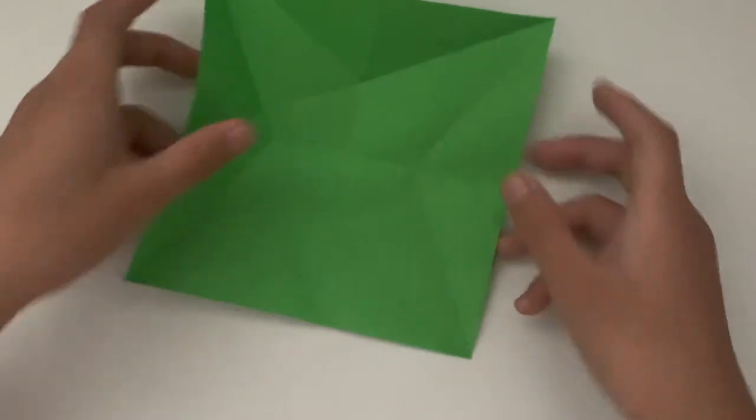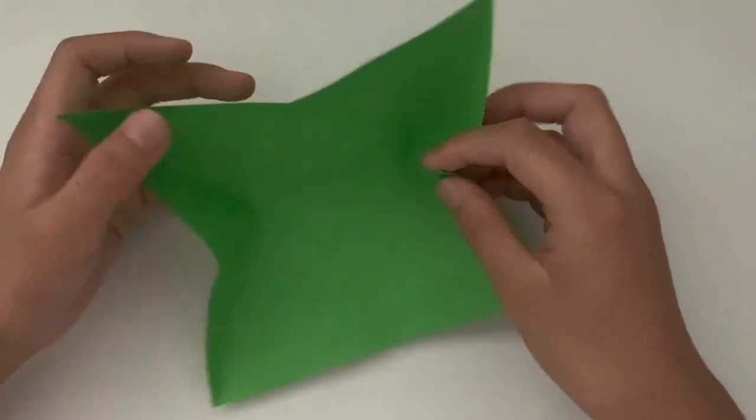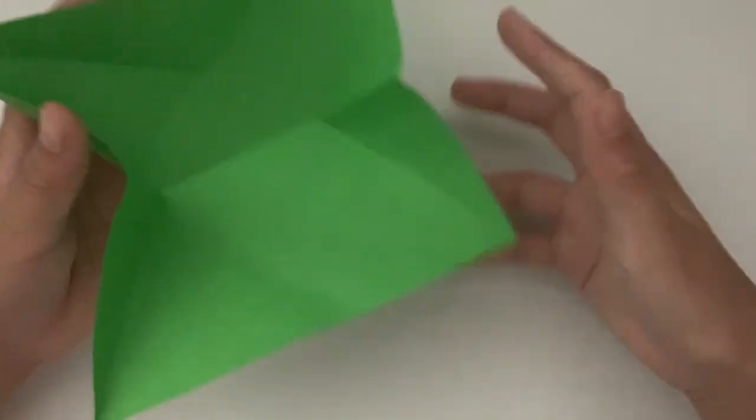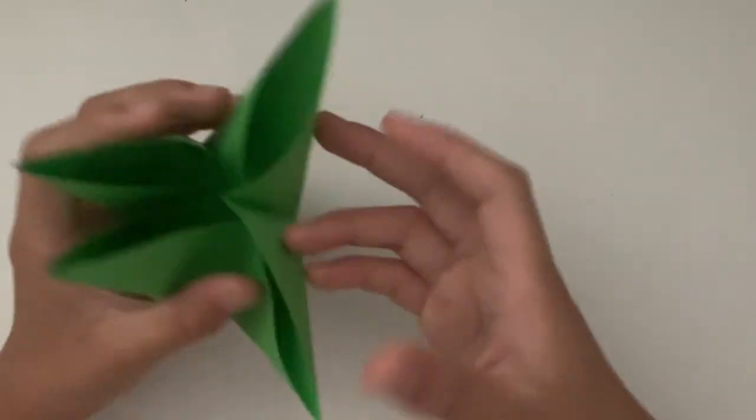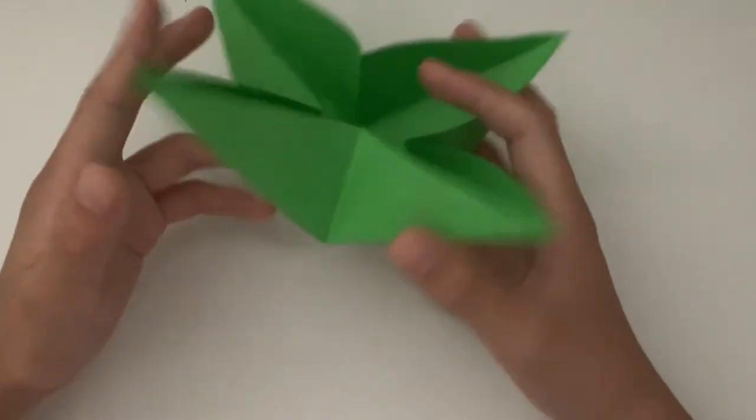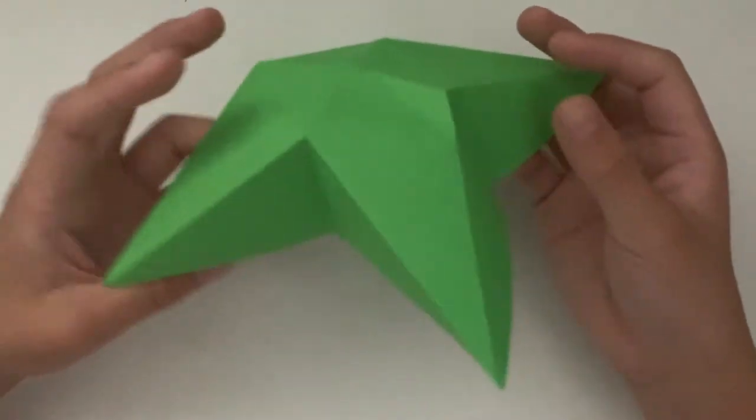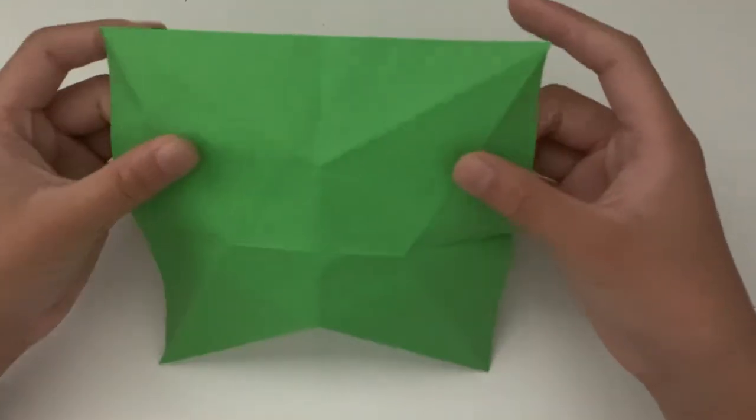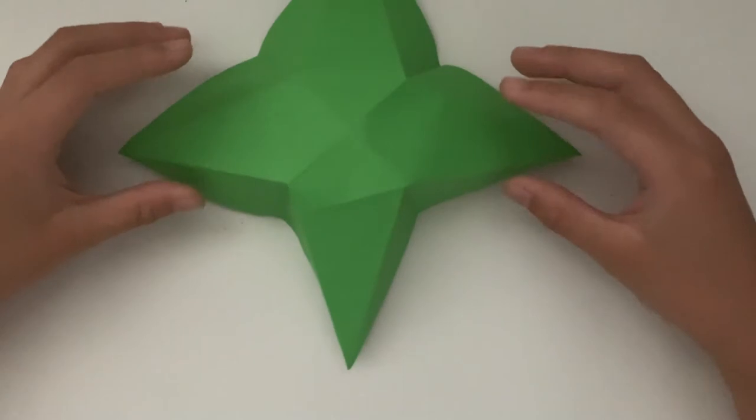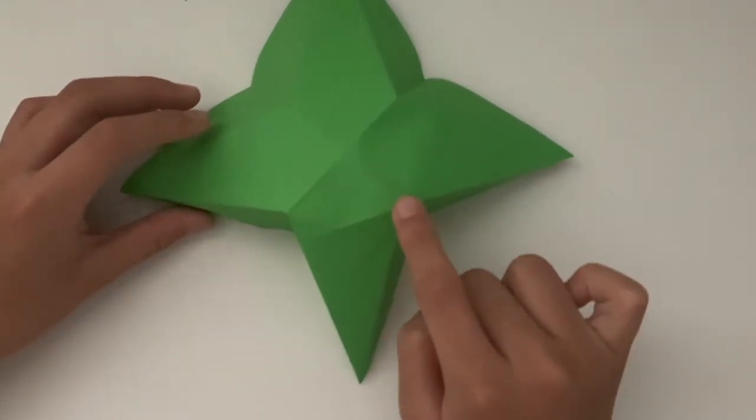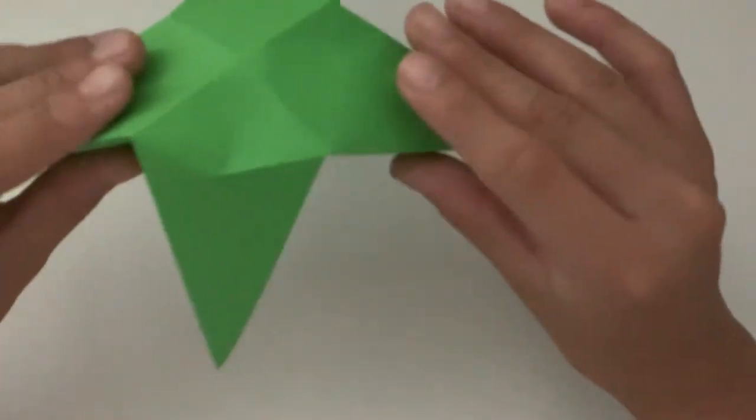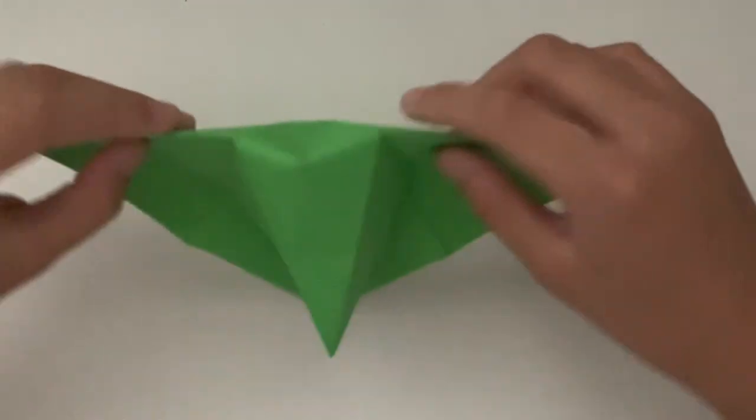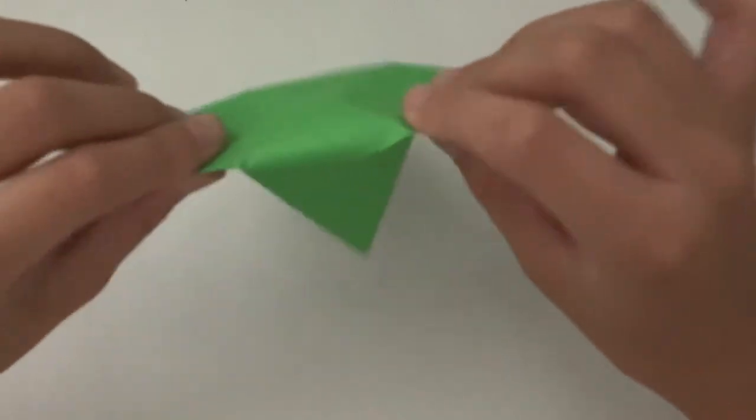Now we're done with those creases. Now what we're going to do is sort of bring them together like this, but it's not done yet. So basically, what we're going to do is we're going to put a line from this edge to this corner. The best way to do is sort of flatten these down and sort of pull this a bit.